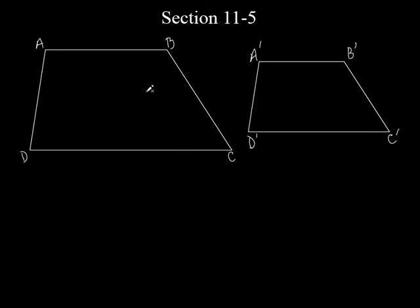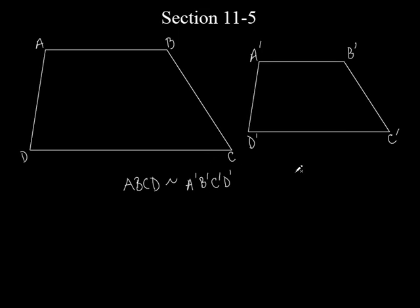Alright, so here's this polygon and here's this polygon. If they are similar to each other, there is a relationship between their areas. These have to be similar. So let's say polygon ABCD is similar to polygon A prime, B prime, C prime, D prime. It's extra words to say, but it looks nice because A and A prime go together, B and B prime go together, and so on. So we know these two figures are similar to each other.